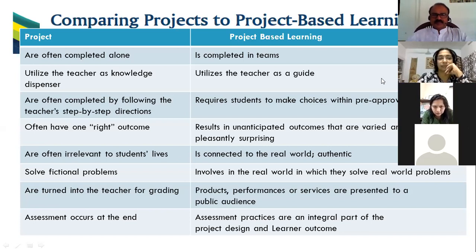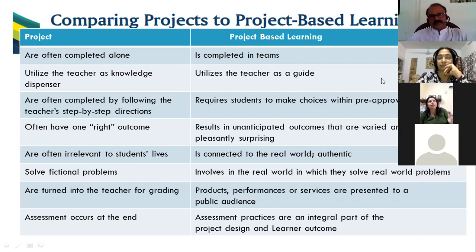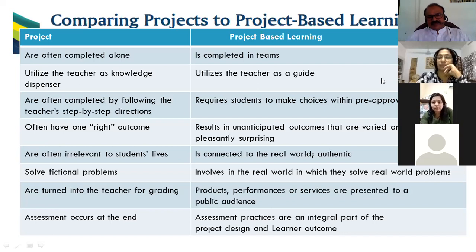Assessment occurs at the end in a traditional project — when the final product is ready. In project-based learning, assessment is in parts — when students take different platforms to reach the culmination level, there is assessment at each level. Because there is also a trial-and-error method: when we try one method and realize it is not working, we go for another one. So that is, again, learning.